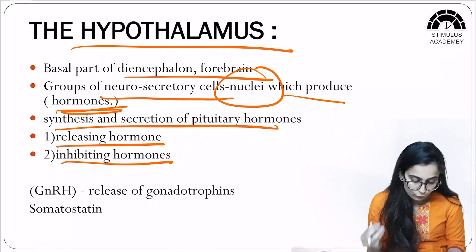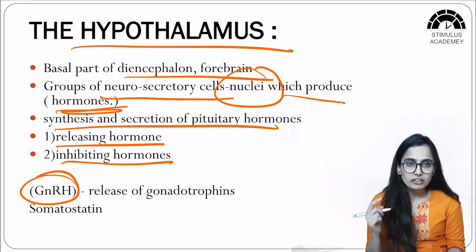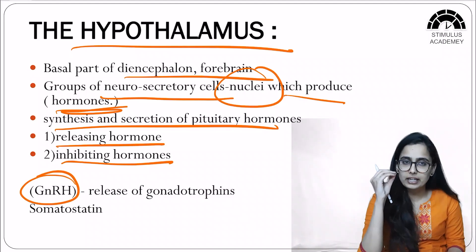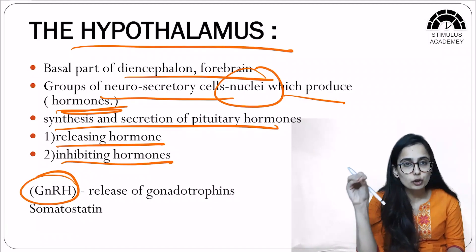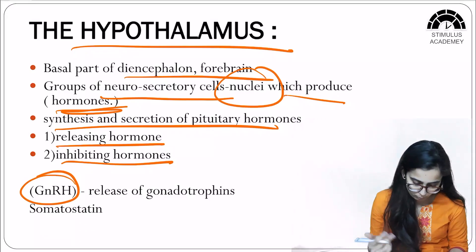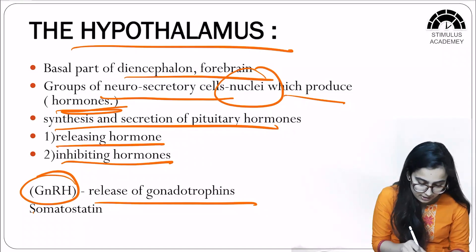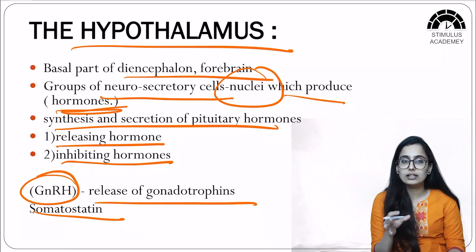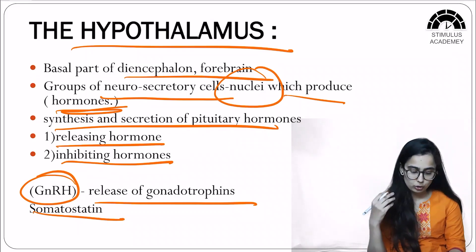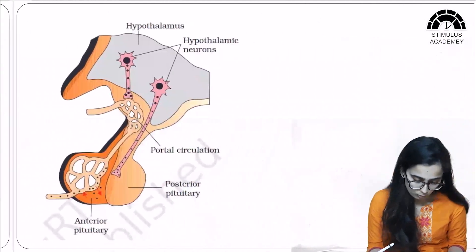For example, GnRH — gonadotropin releasing hormone — is a releasing hormone secreted by the hypothalamus that acts on the pituitary and stimulates it to release gonadotropin hormone. The second example is somatostatin, which is an inhibitory hormone that inhibits growth hormone. So somatostatin is an inhibiting hormone and GnRH is a releasing hormone.